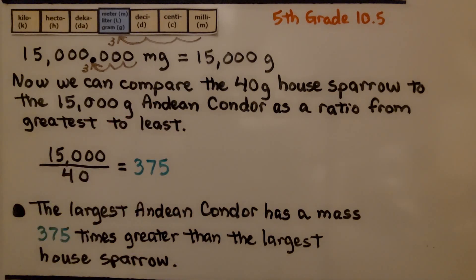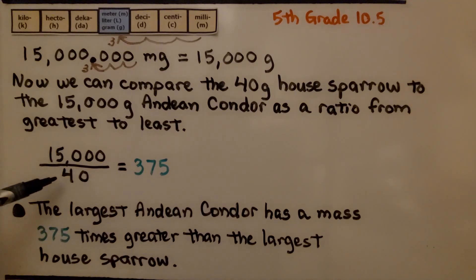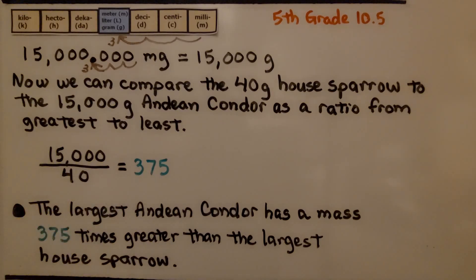Now we can compare the forty-gram house sparrow to the fifteen-thousand-gram Andean condor as a ratio from greatest to least. We write fifteen thousand on top as the numerator and forty on the bottom as the denominator. We divide fifteen thousand by forty, and that's three hundred seventy-five. The largest Andean condor has a mass three hundred seventy-five times greater than the largest house sparrow.